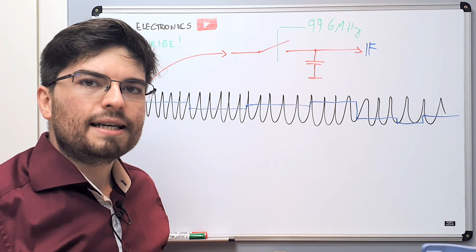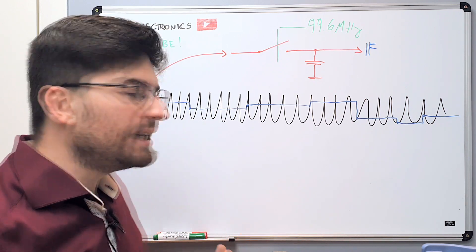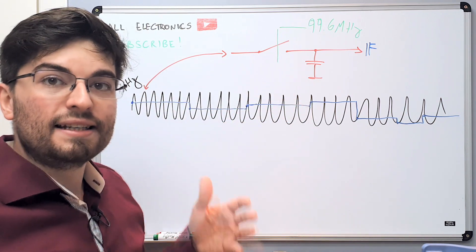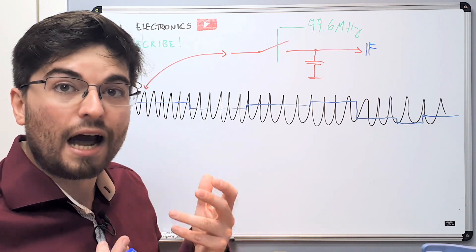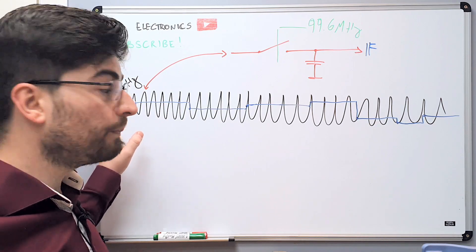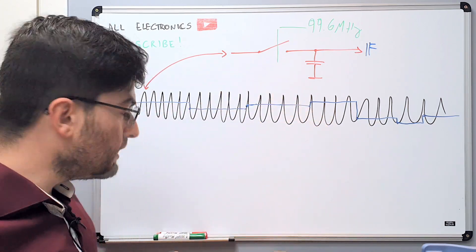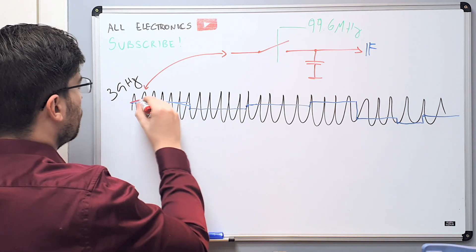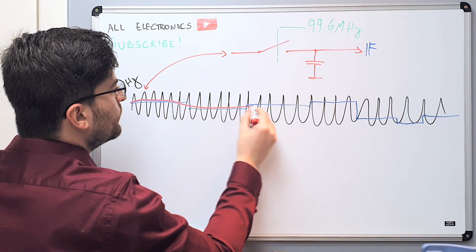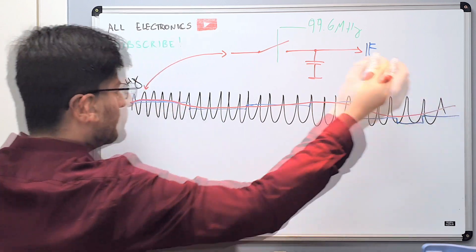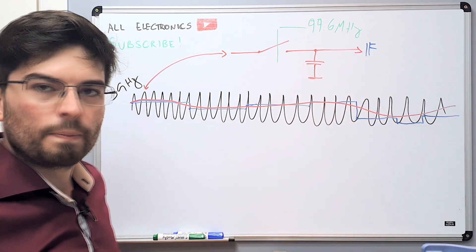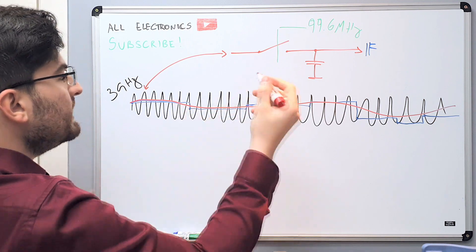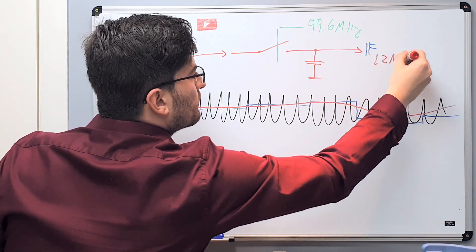What's happening here is aliasing, because we are sampling a signal with a much lower sample rate. This causes aliasing, and in this case aliasing is our friend, because we are down-converting a very high frequency signal to a lower frequency signal. We can see here a down-converted signal. The frequency of this IF signal will be 12 MHz.